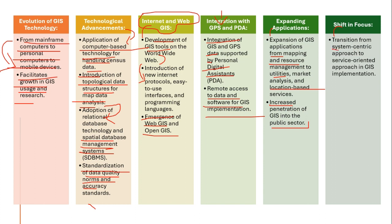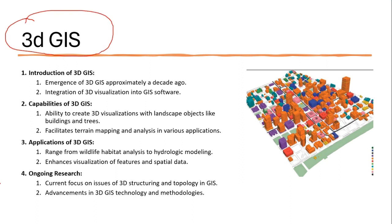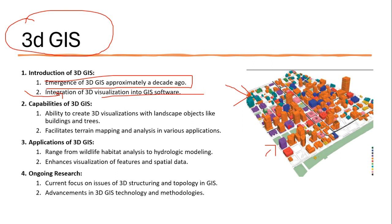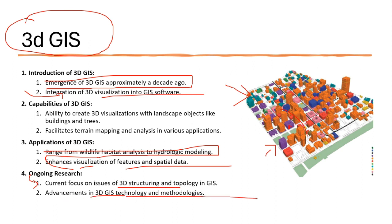GIS has transitioned from a system-centric approach to a service-oriented approach. 3D GIS, which emerged approximately a decade ago, is now integrated for 3D visualization in GIS software, enabling visualization of building heights and obstacles in airway paths. It is also used for wildlife habitat analysis and hydrologic modeling. Ongoing research focuses on 3D structuring and topology in GIS, showing continued advancement in 3D GIS technology.